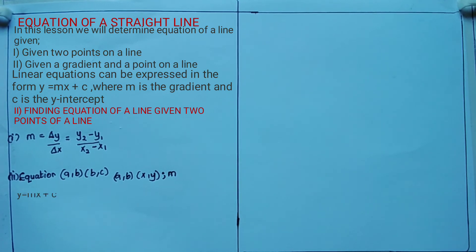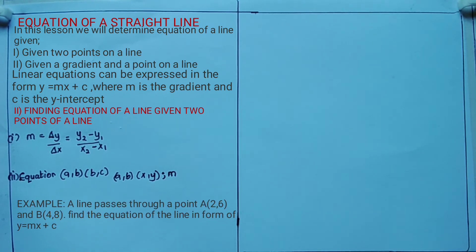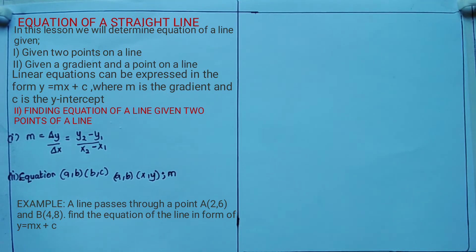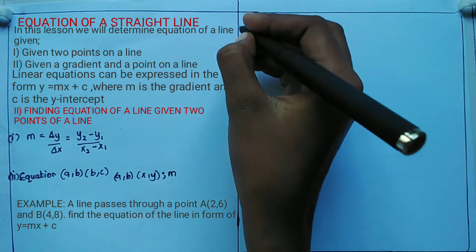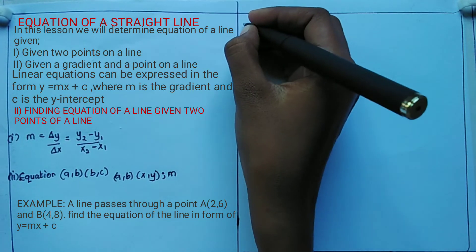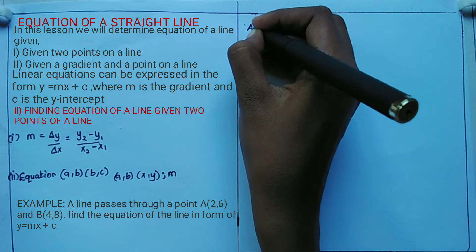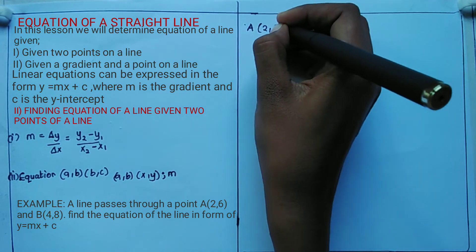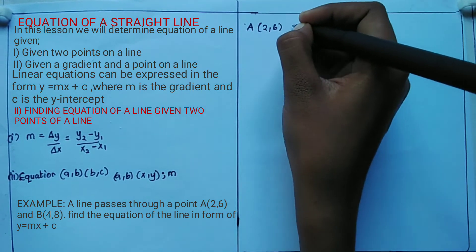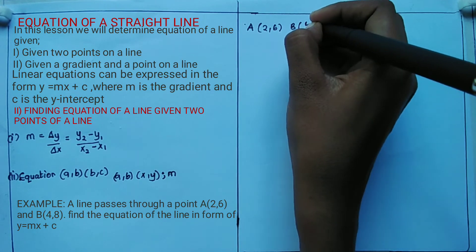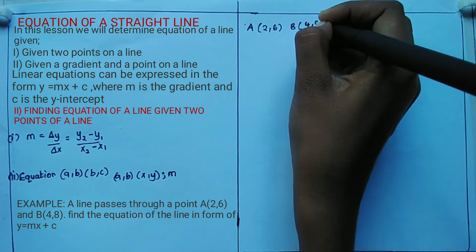An example: a line passes through points A(2, 6) and B(4, 8), and you are told to find the equation of the line in the form y = mx + c. You have been given A is (2, 6) and B is (4, 8) — these are the two points.